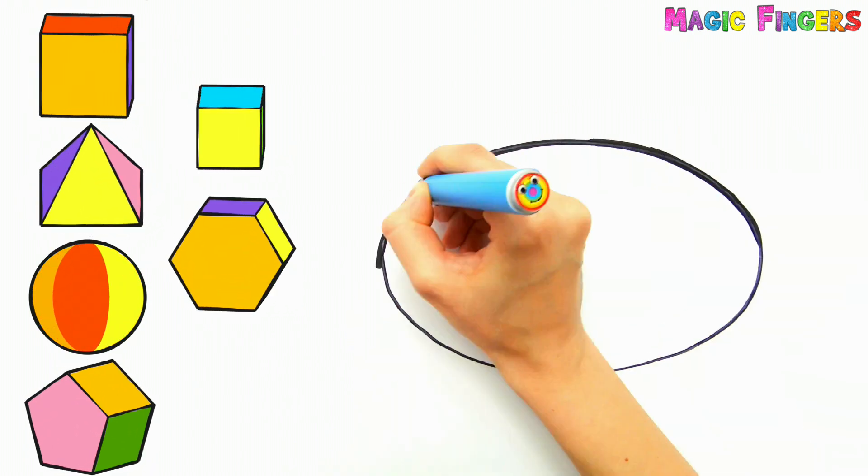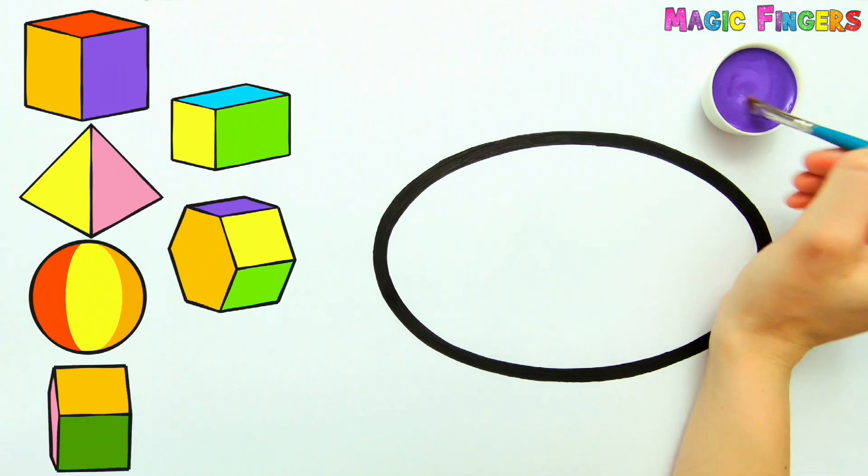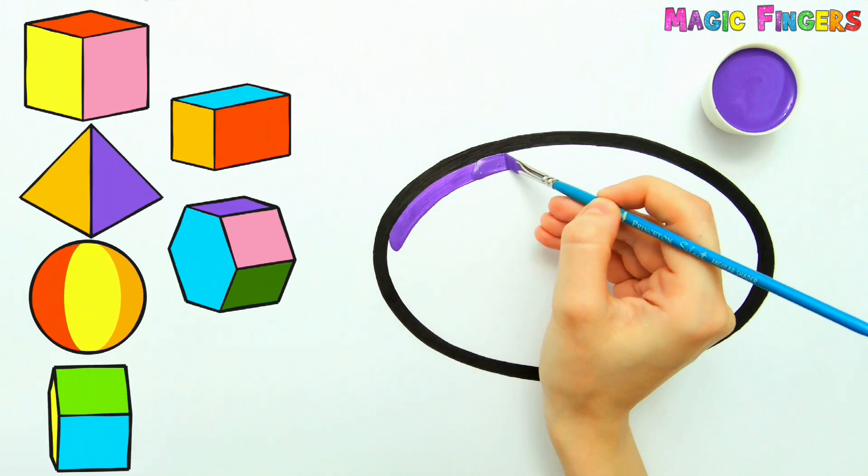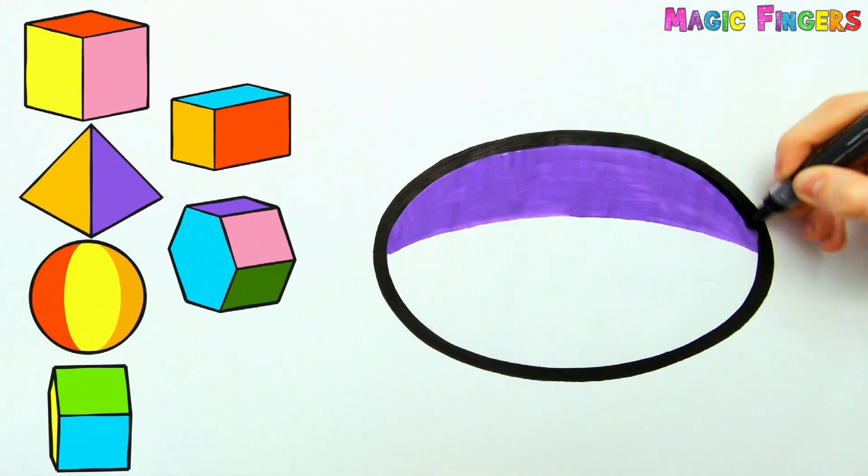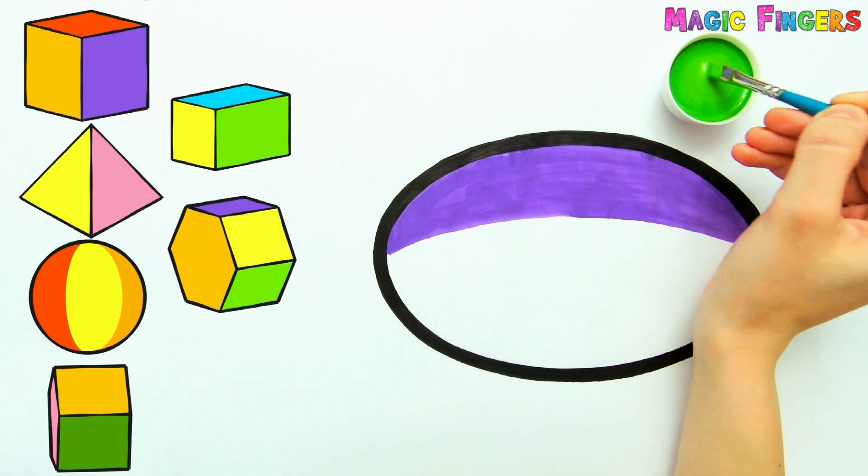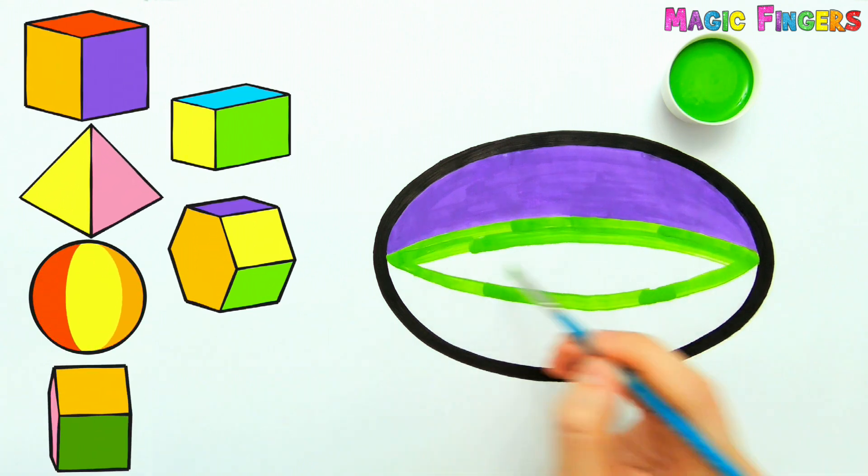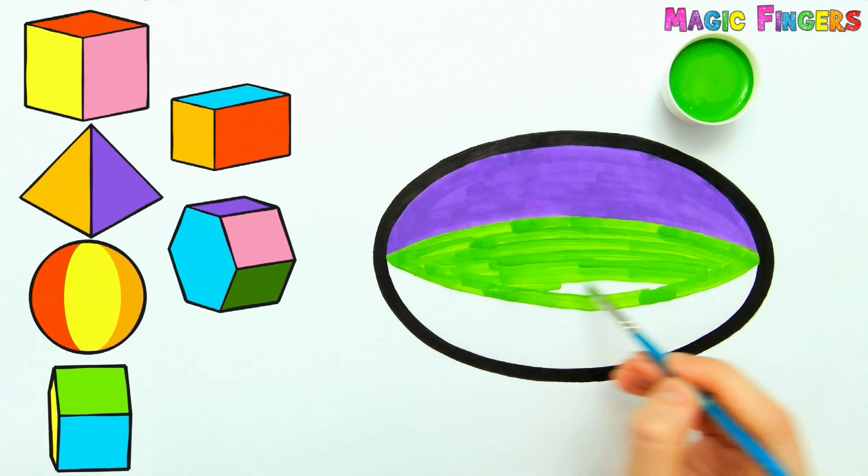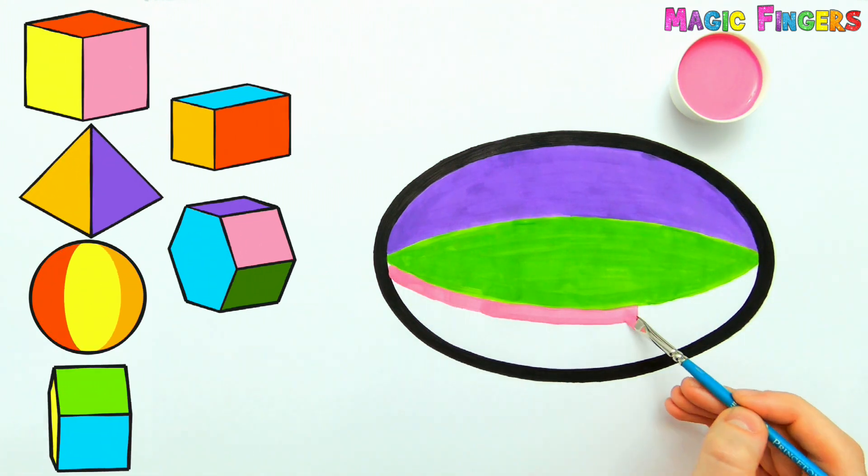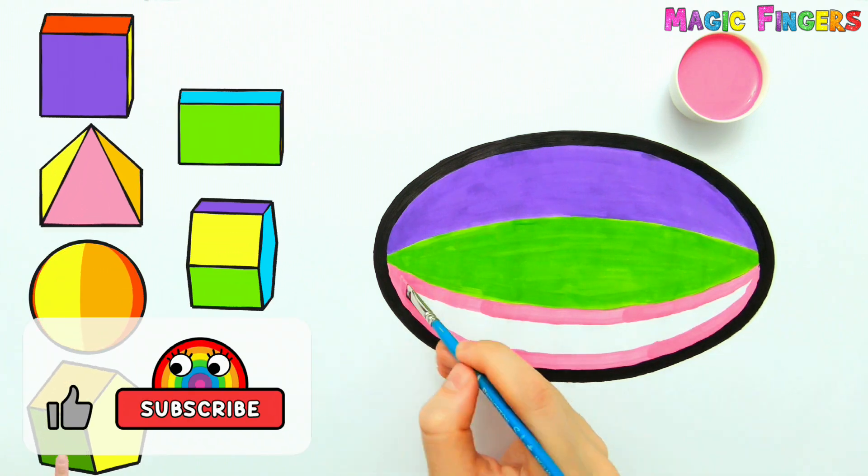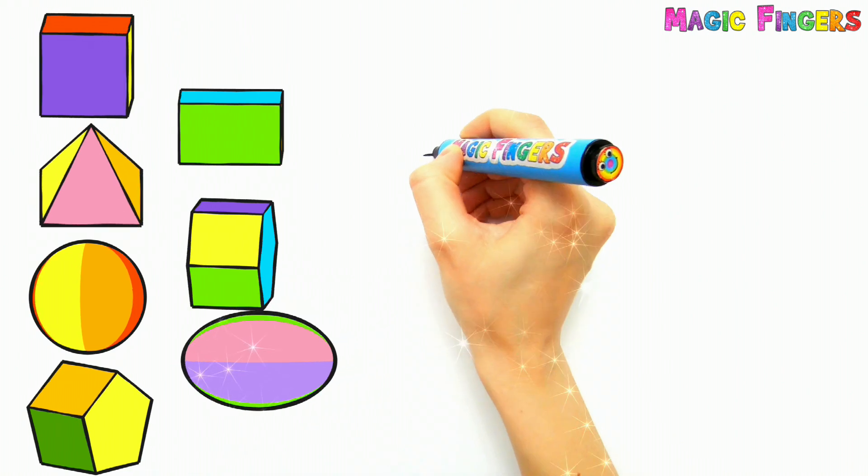Now I'm drawing an ellipse! Purple, red, green, pink. Magic fingers! Ta-da! Ellipse turned into an ellipsoid!